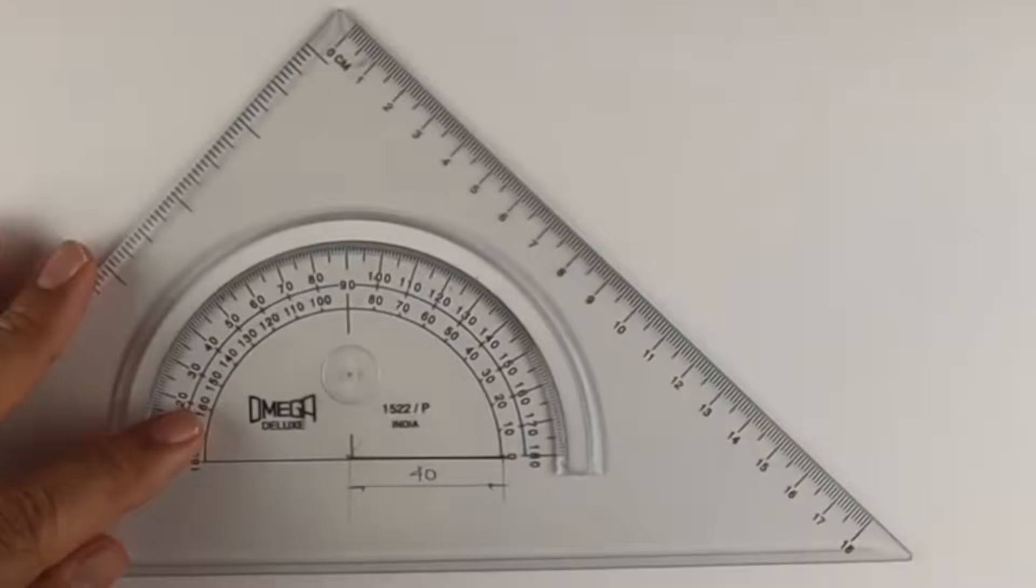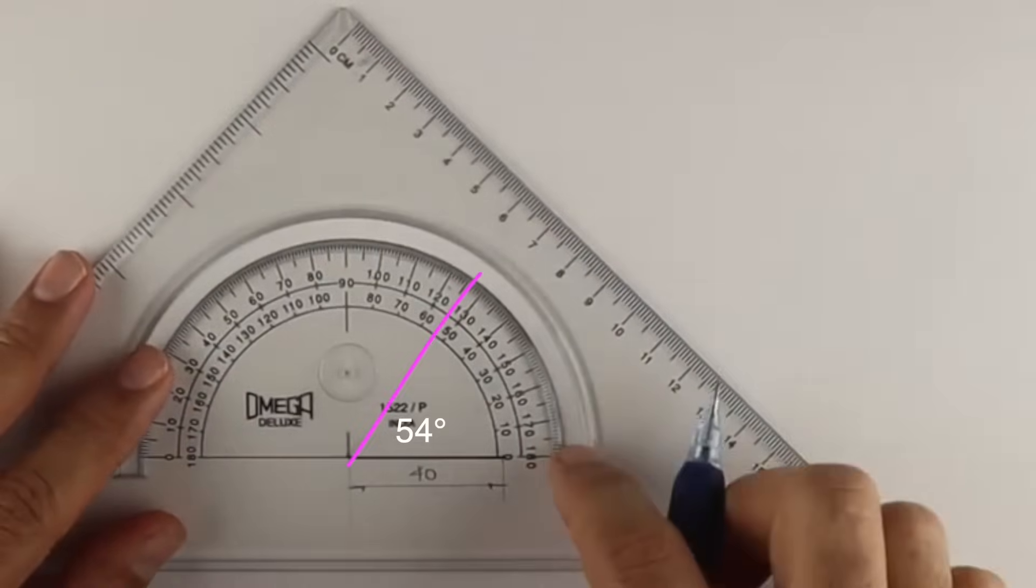First you take side 40, then from one point you take 54 degrees, like this.